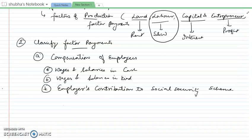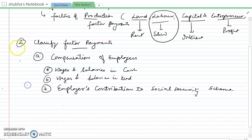If an injured worker receives compensation from an insurance company, that will not be included here. Also note that traveling allowance is not added because it is a regular feature of the job — it means employees are doing their job. So we don't have to add it. This is the first step covering the labor component.